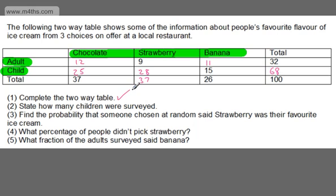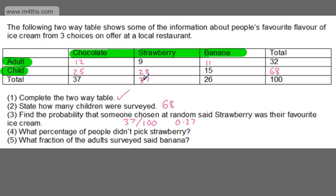So we've completed the two-way table. In the second part, we're asked to state how many children were surveyed — the total number of children was 68. Next, find the probability that someone chosen at random said strawberry was their favourite ice cream. 37 people in total said strawberry out of 100 surveyed, so that's 37 over 100, or 0.37.